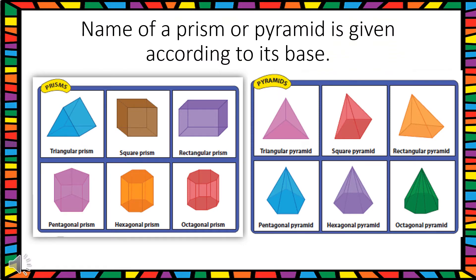So how do we name prisms or pyramids? The name of a prism or pyramid is given according to their bases. For example, if the base is a triangle, then it will be a triangular prism; if it is a square base, then it will be a square prism. Similarly for a pyramid, if the base is a triangle it will be a triangular pyramid, if the base is a square it will be a square pyramid, and so on.